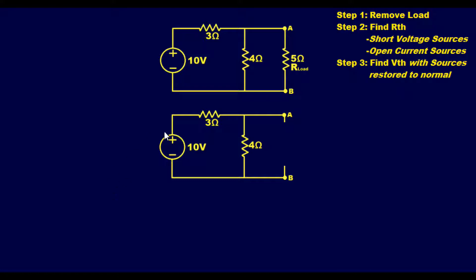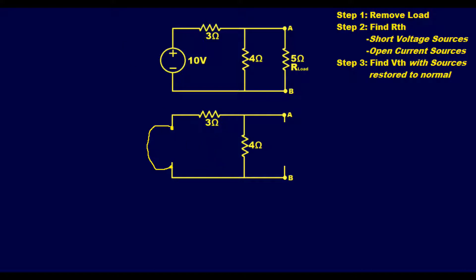Step two: find R_thevenin. We have to short our voltage sources and open our current sources. Since we don't have any current sources, all we have to do is short our voltage source. We remove the voltage source and put a short in its place. Next, we perform measurements between A and B for resistance, as if we had a meter hooked between those points. Looking in, we have 4 ohms in parallel with 3 ohms.